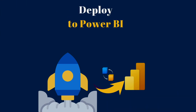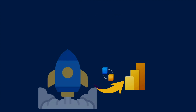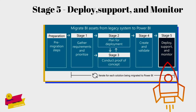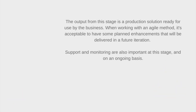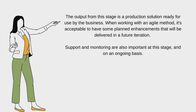In this part we are going to discuss Stage 5, which is concerned with deploying, supporting, and monitoring content when migrating to Power BI. The primary focus of this stage is to deploy the new Power BI solutions to production. The output from this stage is a production solution ready for use by the business. Support and monitoring are also important at this stage and on an ongoing basis after deploying the Power BI reports.